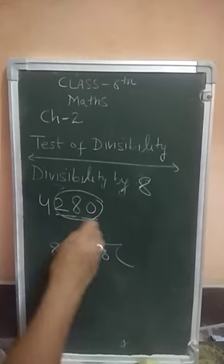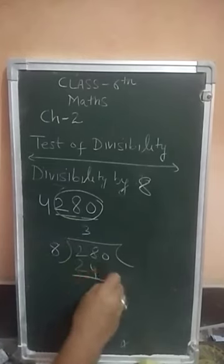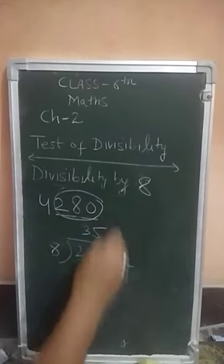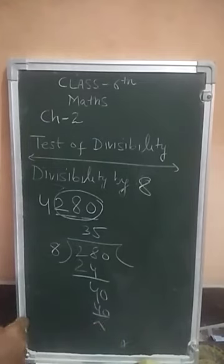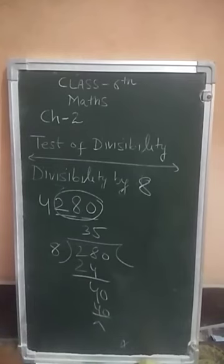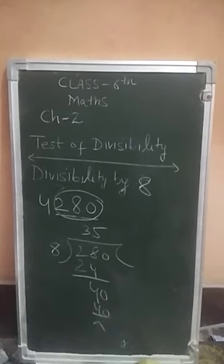For example, take the number 4280. We check the last 3 digits: 280. Dividing 280 by 8 gives 35, so 280 is divisible by 8, which means the whole number 4280 is also divisible by 8. To summarize: check the last 3 digits (100's, 10's, and 1's place). If they are divisible by 8, the whole number is divisible by 8.